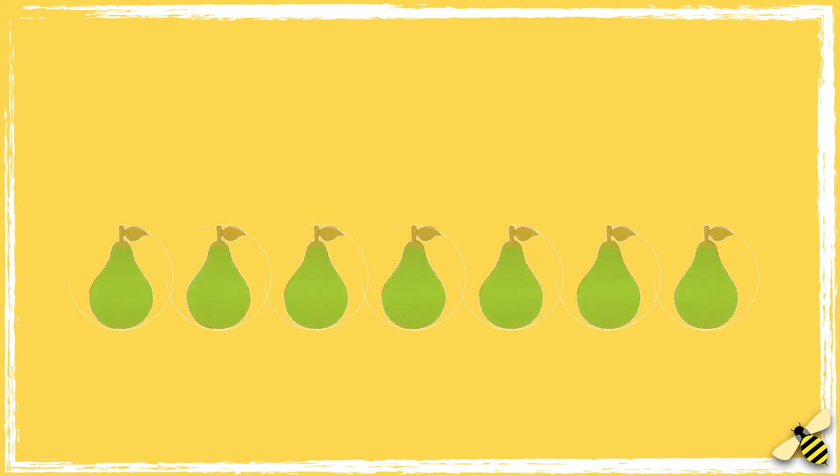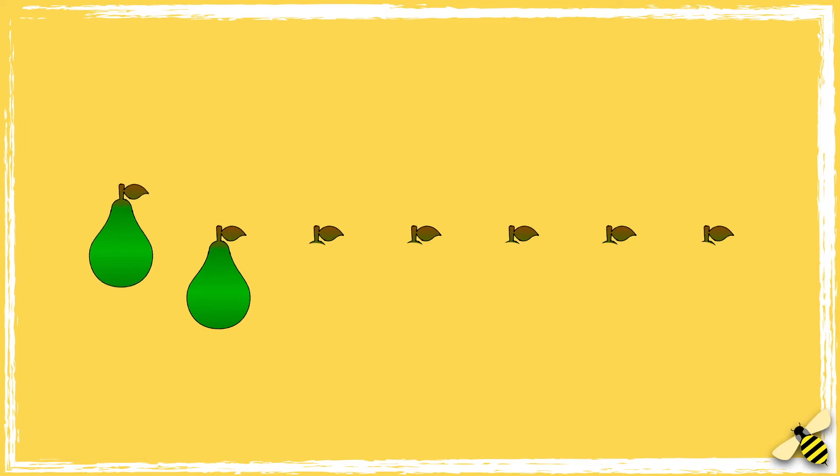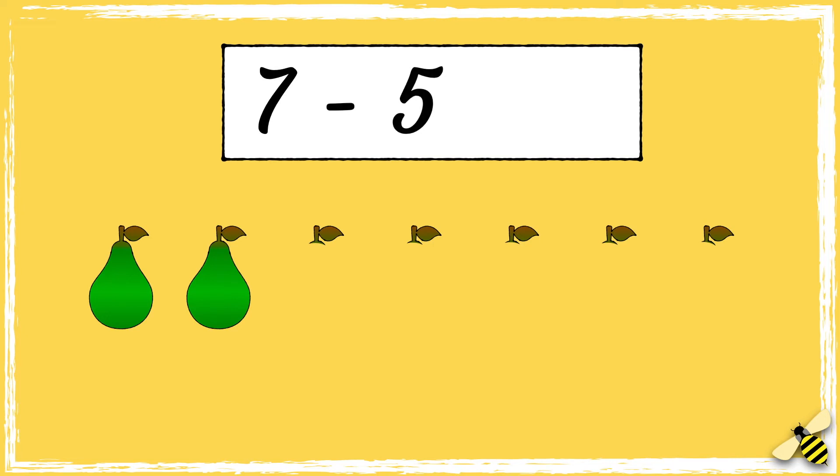I have seven pears. I eat five pears, one two three four five. How many have I got left? One two. Let's write a number sentence to show this. I started with seven and I ate five, so seven take away five. I had two left, so seven take away five equals two.